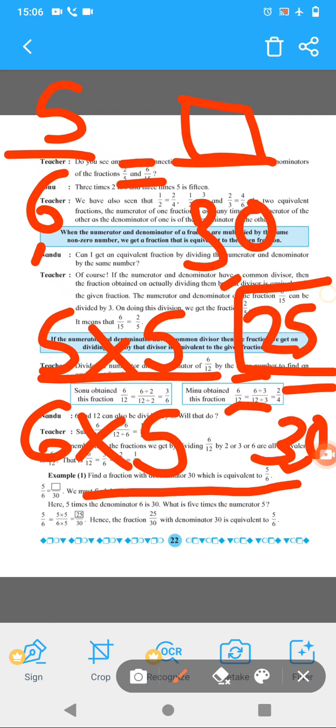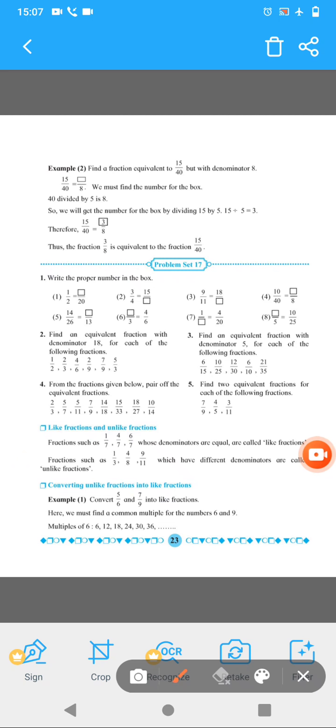So 5 5s are 25 and this 30. The numerator is 25.